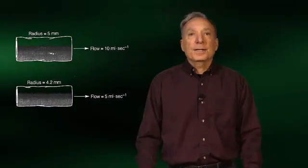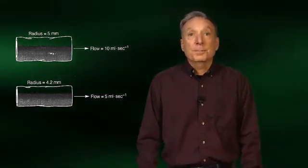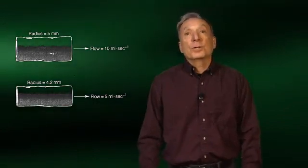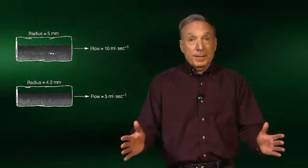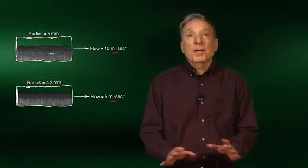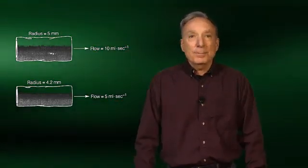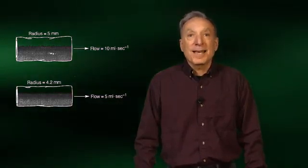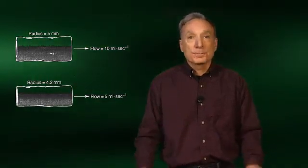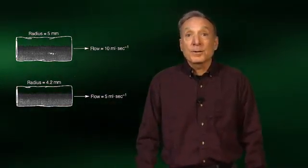This figure indicates just how powerful smooth muscle relaxation or constriction in a blood vessel can be in increasing or decreasing blood flow. In this example, if the radius of the vessel is reduced a mere 0.8 millimeters, blood flow through that vessel will be cut in half. This is exactly what happens during exercise in blood vessels of less active organs, thereby redirecting blood flow to the working muscles. On the other hand, the blood vessels to the working muscles relax, thus increasing their radius, allowing for greater blood flow.